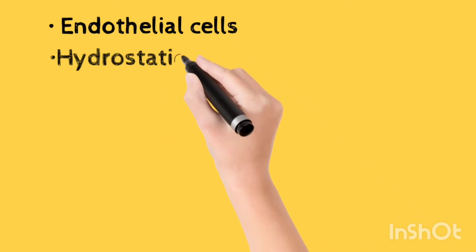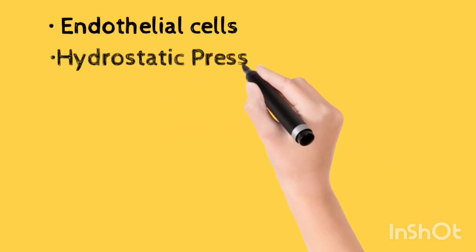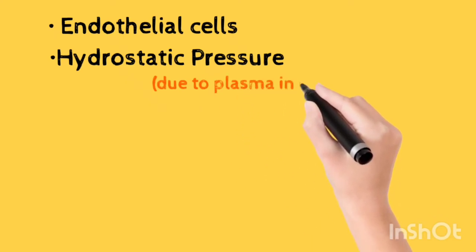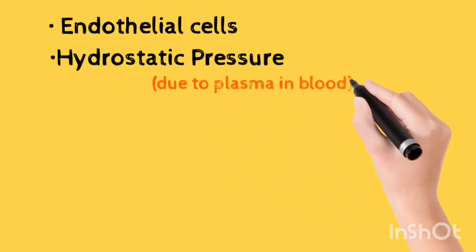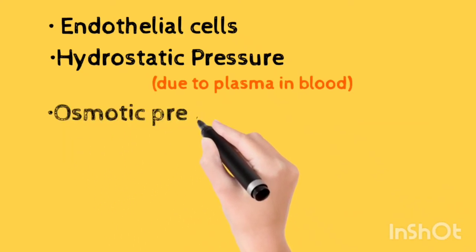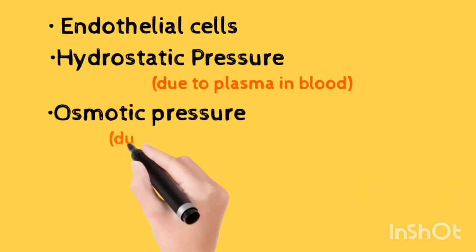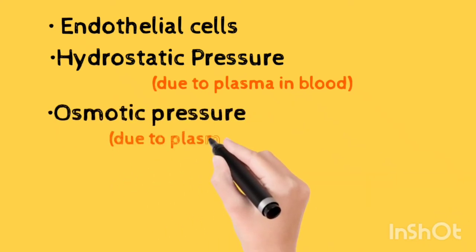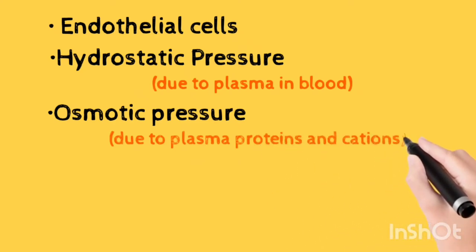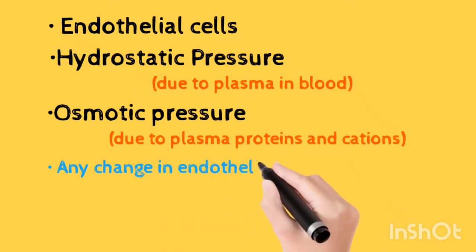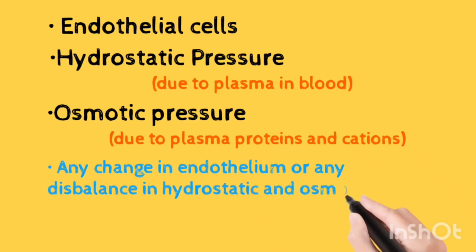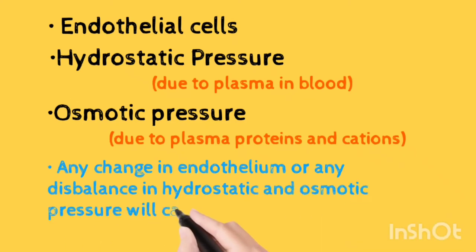Hydrostatic pressure is the positive pressure exerted by plasma on the walls of blood vessels. Osmotic pressure is a negative pressure, exerted by plasma proteins and ions present in the blood compartment. The balance between hydrostatic pressure and osmotic pressure is very important — any change will cause fluid to leak out, leading to edema, that means swelling.